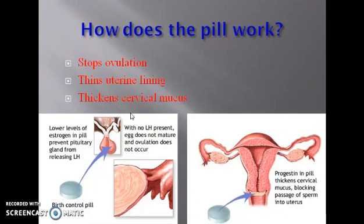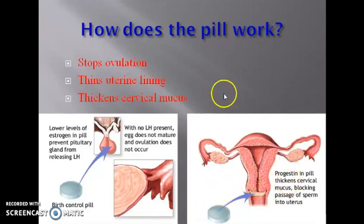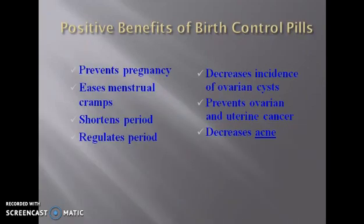Not only that, birth control pills make the uterine lining thinner, which disallows fertilization from taking place. Also, progesterone in the pill thickens the cervical mucus, blocking the passage of sperm into the uterus, so the spermatozoa cannot pass through to where fertilization would take place.